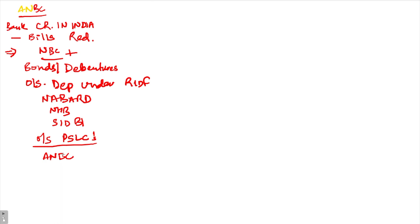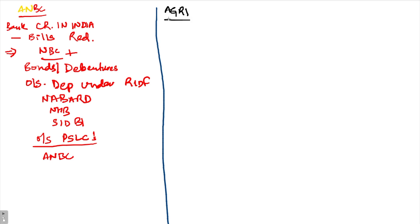Now let's come to the specific categories. The first category is agriculture, which covers three areas: (1) farm credit, (2) agriculture infrastructure — for example, if a farmer is creating agriculture infrastructure and a bank provides a loan for that — and (3) ancillary activities.